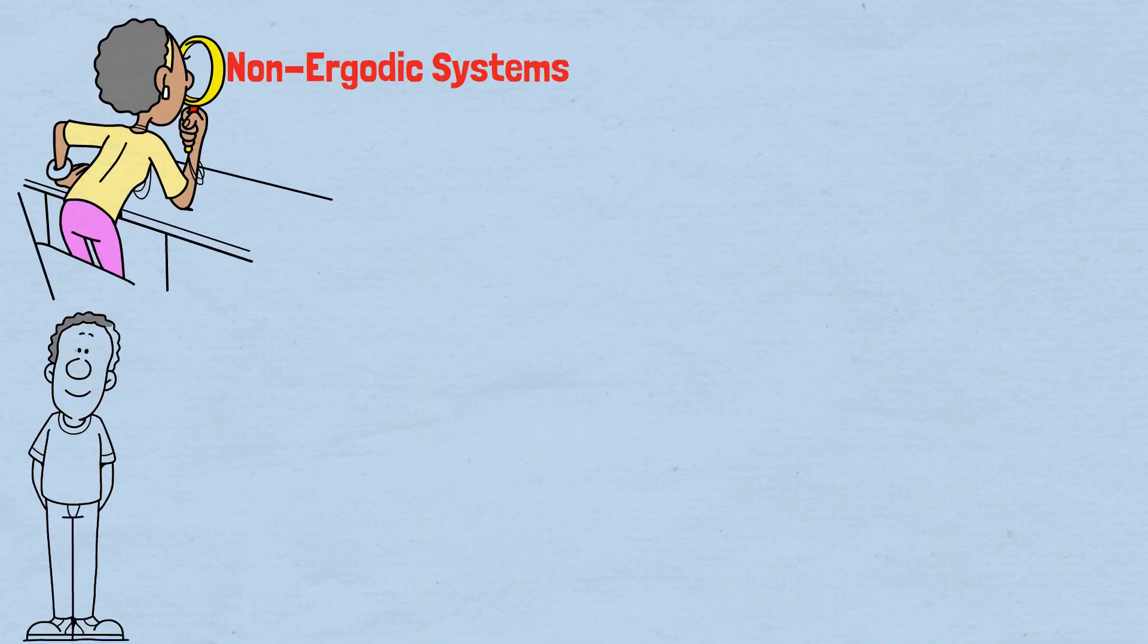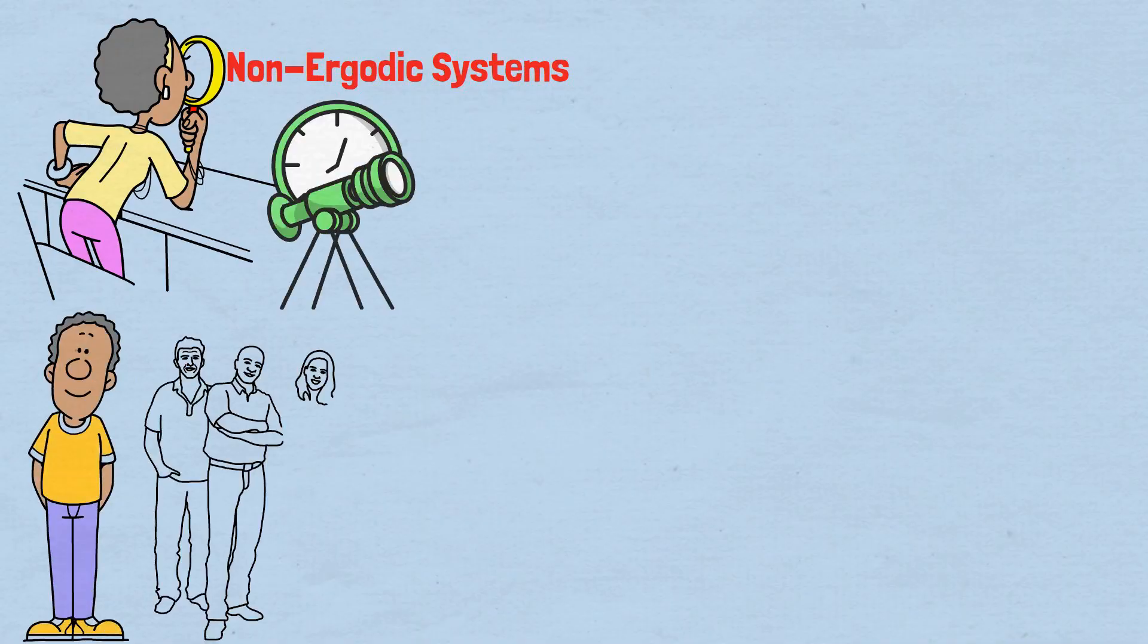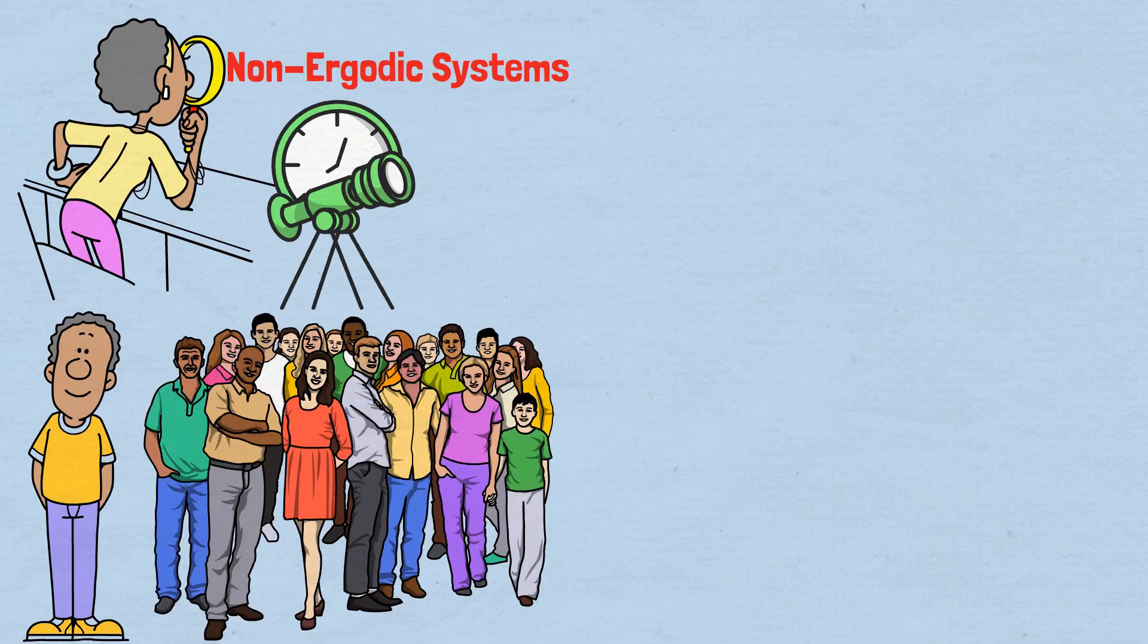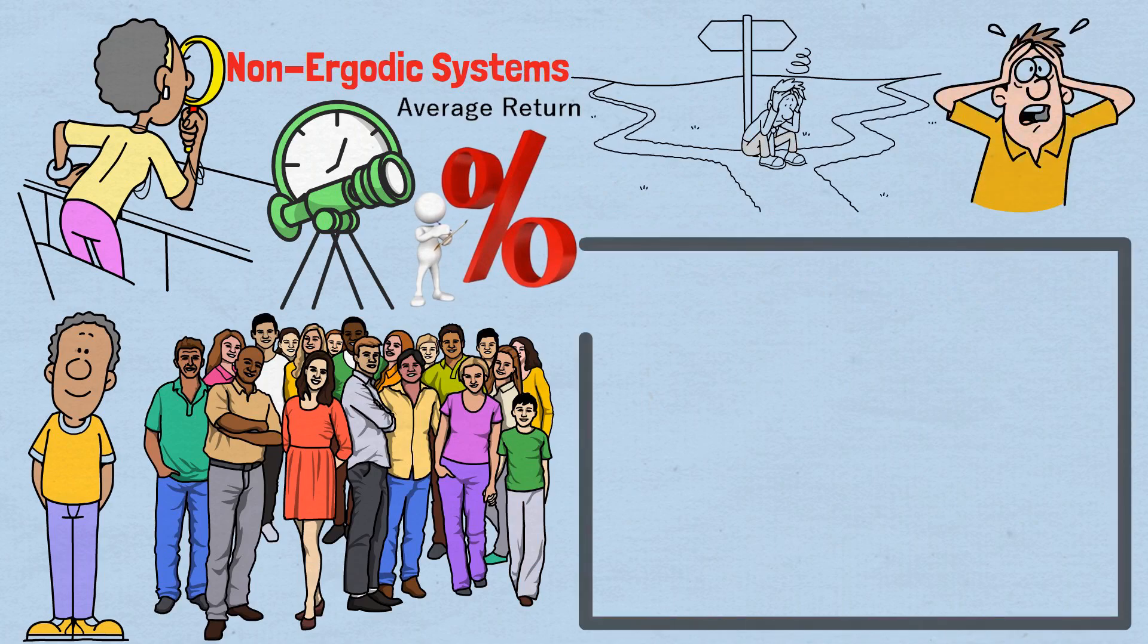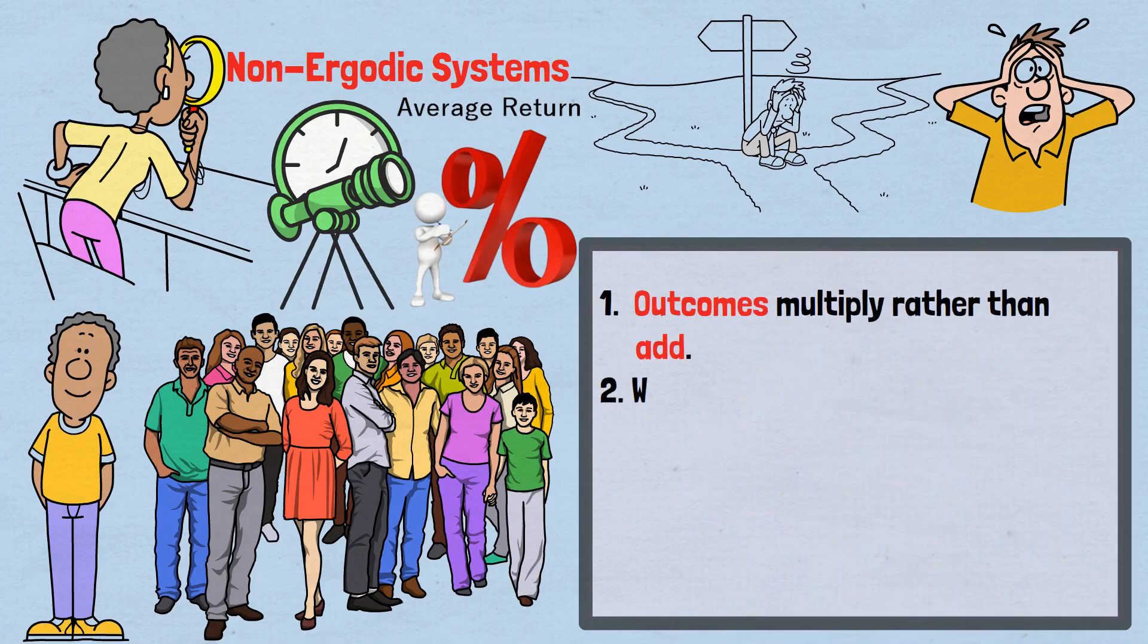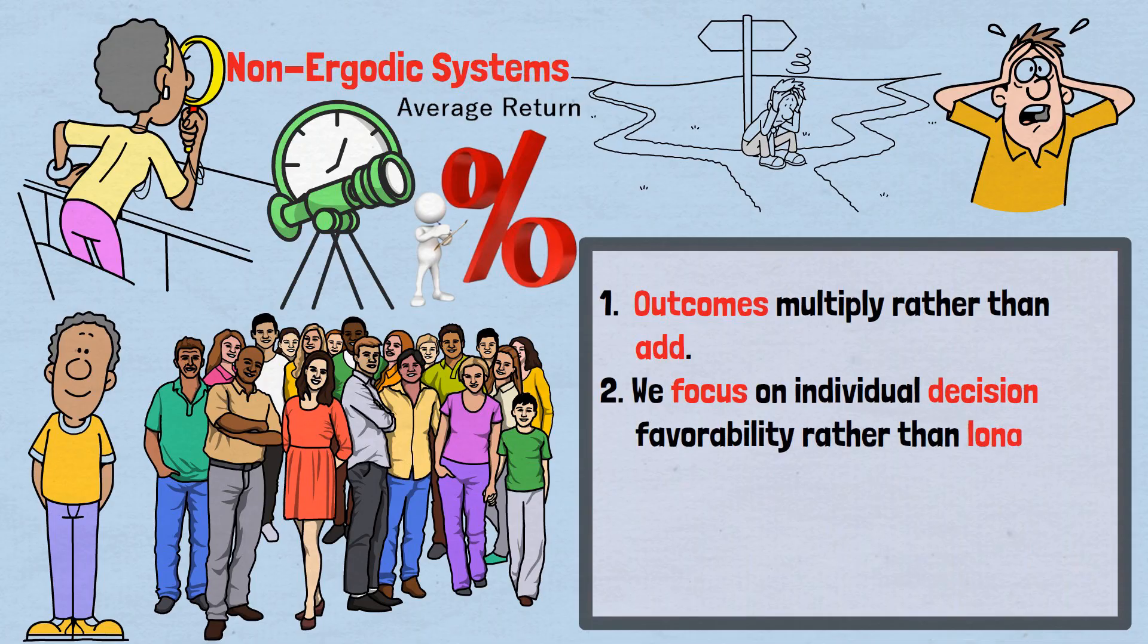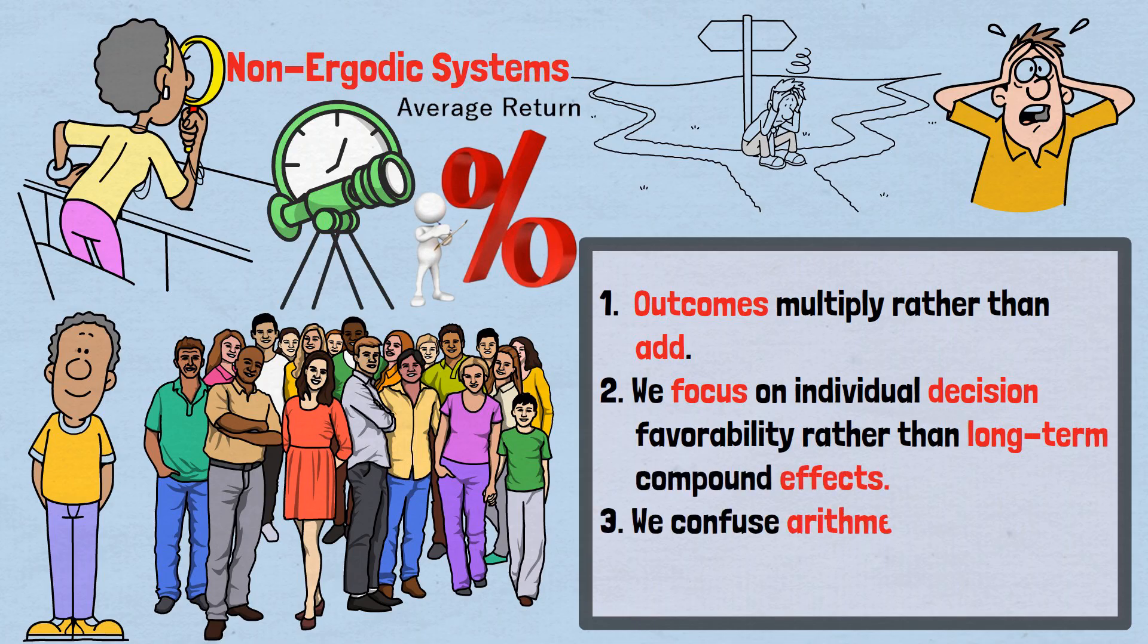The just one more paradox teaches us to recognize non-ergodic systems, systems where individual outcomes differ dramatically from population averages. In such systems, focusing on average returns can be not just misleading but catastrophic. The paradox appears whenever: 1. Outcomes multiply rather than add. 2. We focus on individual decision favorability rather than long-term compound effects. 3. We confuse arithmetic means with geometric reality.